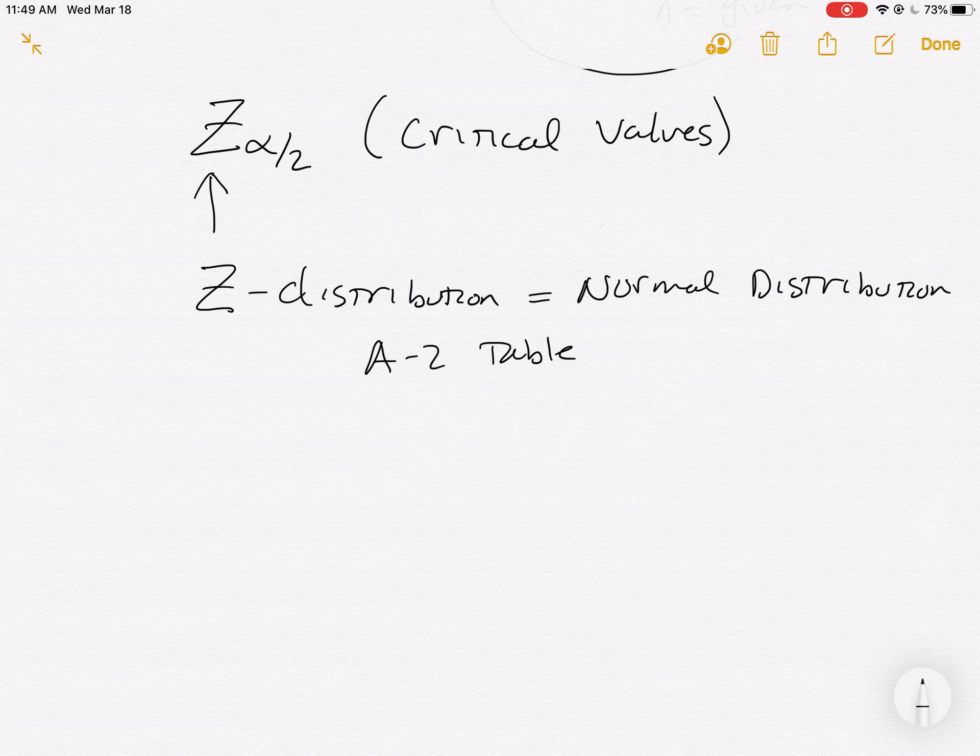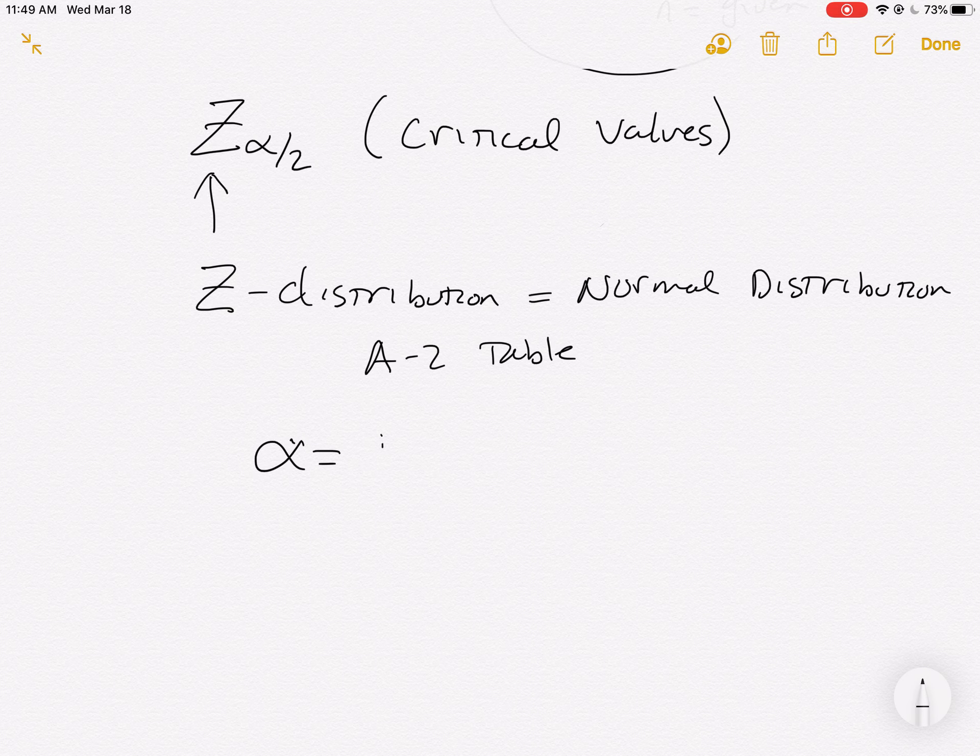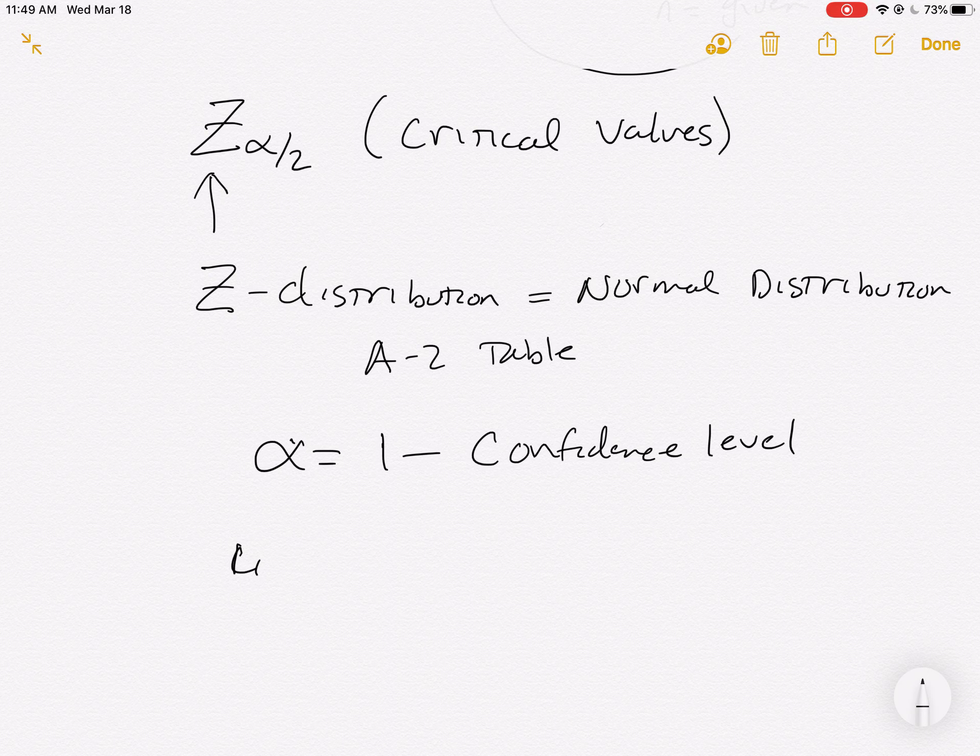The next symbol in there is alpha. Alpha is equal to 1 minus the confidence level. So how we get the z alpha over 2, there's going to be a certain number in there that's going to allow us to know how to get it. And that is the level of confidence or the confidence level.